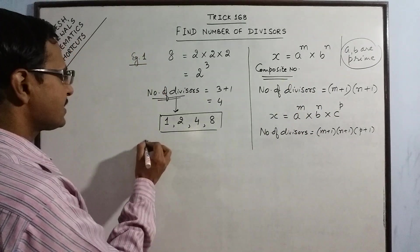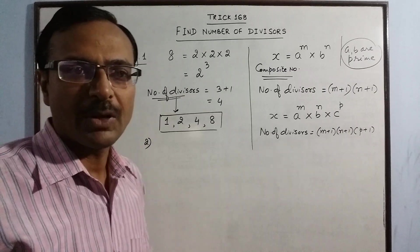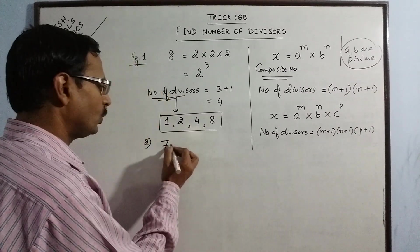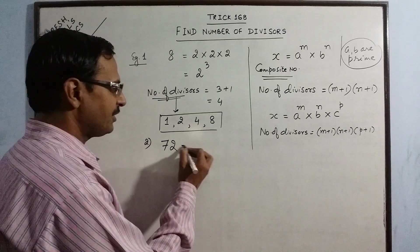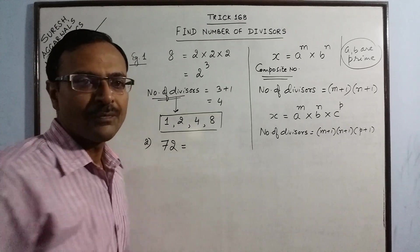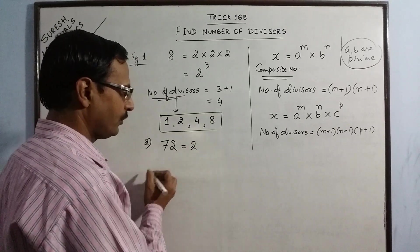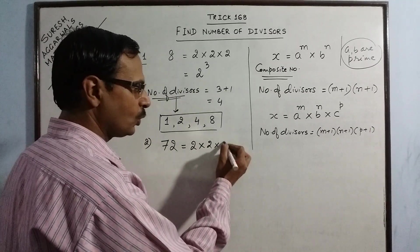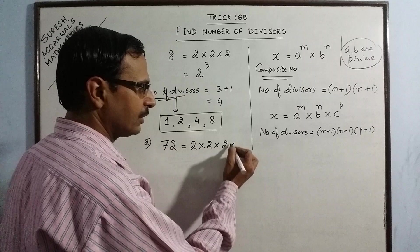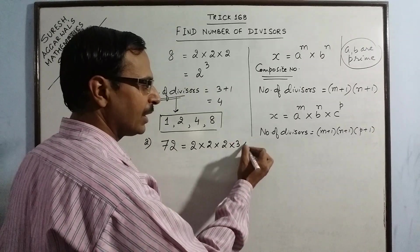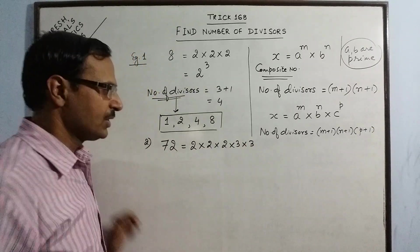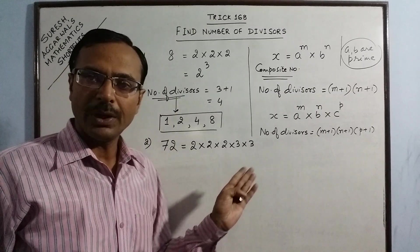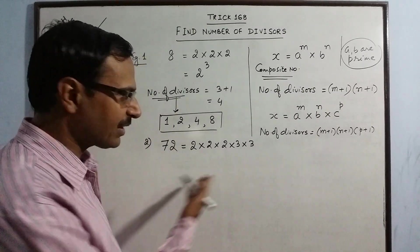Now to understand this in a better way, let us take one more example, a little bit larger number. Say we have 72. Now 72, the factors of 72 are 2, we get 36, 2, we get 18, 2, we get 9, 3, we get 3, and 3, we get 1. So 2 into 2 into 2 into 3 into 3, so this is the prime factorization of 72.